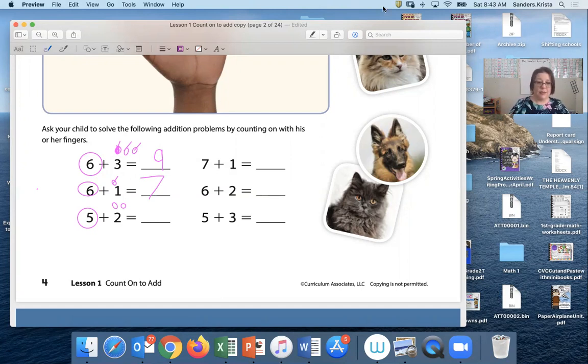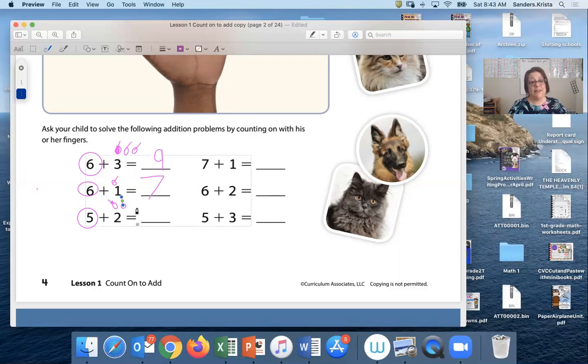All right, now we're gonna do it on paper. 5, 6, 7. So what is my total? 7. Across the sky and down from heaven. That's the way we make a 7.